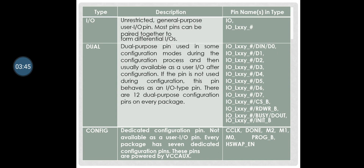IO stands for input/output pin. These are general-purpose user input/output pins; most pins can be paired together to form differential input/outputs. The next pins listed are dual-purpose pins used in some configuration modes during the configuration process, and then usually available as user input/output after configuration. If a pin is not used during configuration, it behaves as an input/output pin. There are 12 dual-purpose configuration pins on every package.